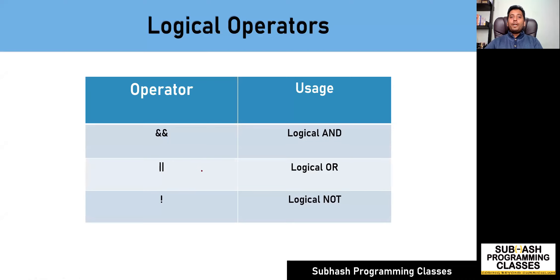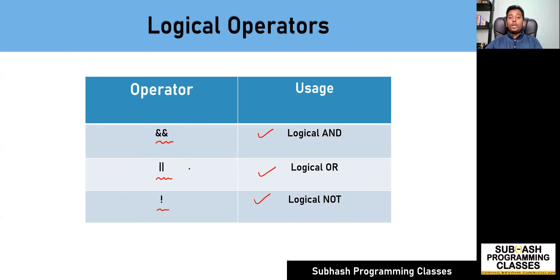So how many logical operators are there in C? In C language, there are three logical operators. They are logical AND, logical OR and logical NOT. I prefer calling it as logical AND-AND operator, logical OR operator and logical NOT operator. These operators work based on a specific truth table. So first, let us understand how the truth table will work, and based on that, we will start evaluating a few expressions that involve logical operators.